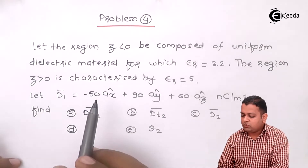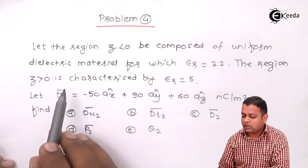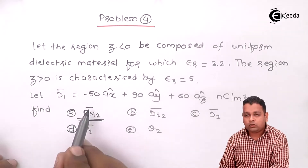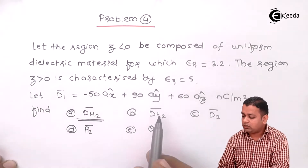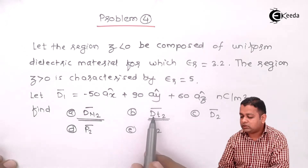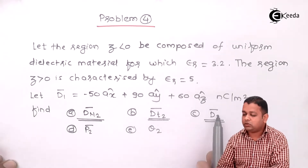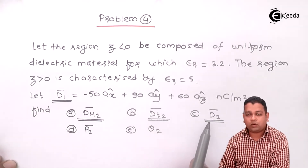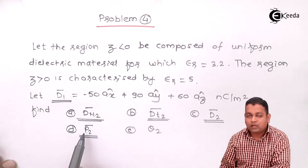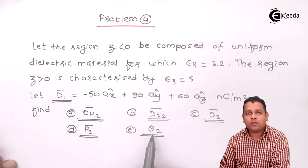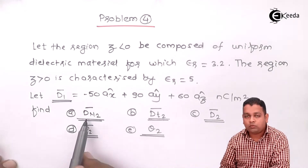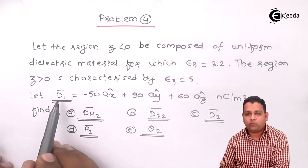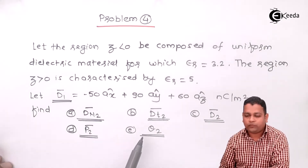After reading the problem statement, you may notice that the given situation for problem number 4 is the same as in problem number 3, but the things to calculate are different. Here we require the vector form of the normal component of electric flux density in medium 2, the vector form of the tangential component in medium 2, the vector representation of electric flux density in medium 2, polarization in medium 2, and the angle theta. Everything given is for medium 1 and we must calculate for medium 2.